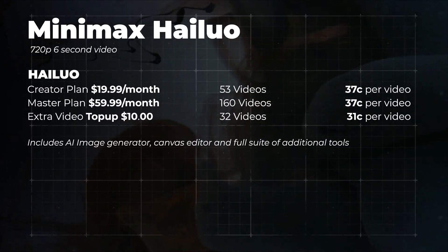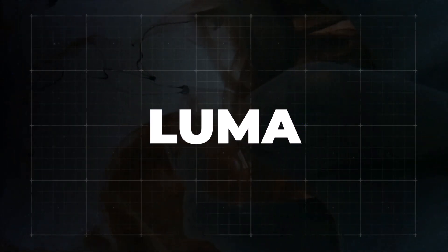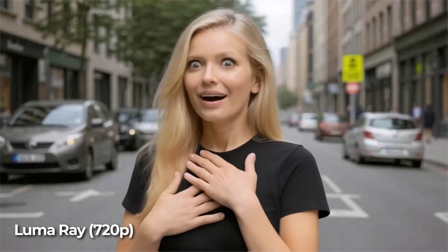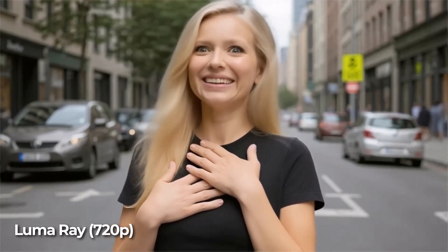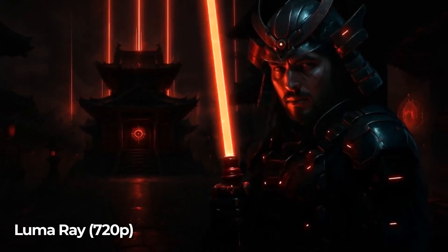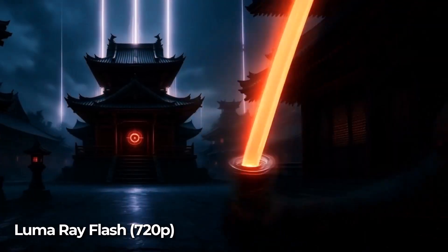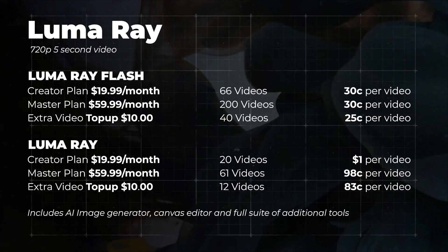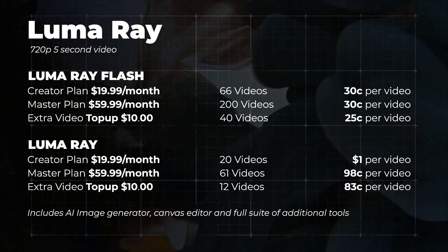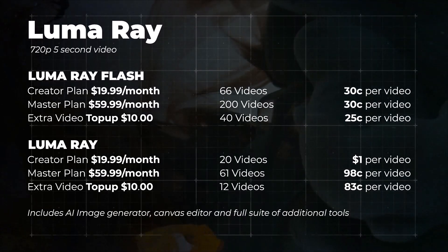With Luma, we have Luma Ray and Luma Ray Flash — the cheaper model. Luma Ray's reaction is a bit extreme and not very organic. Luma Ray Flash is more natural but has no movement and some weird finger artifacts. For the samurai image, Luma Ray barely moves — basically a still image zooming out — and Luma Ray Flash has a weird lightsaber jiggle. Not super impressed overall, especially since Luma Ray is almost a dollar a video.